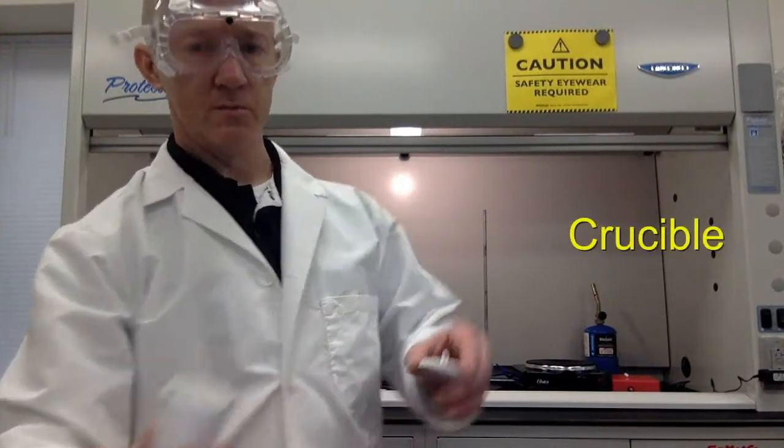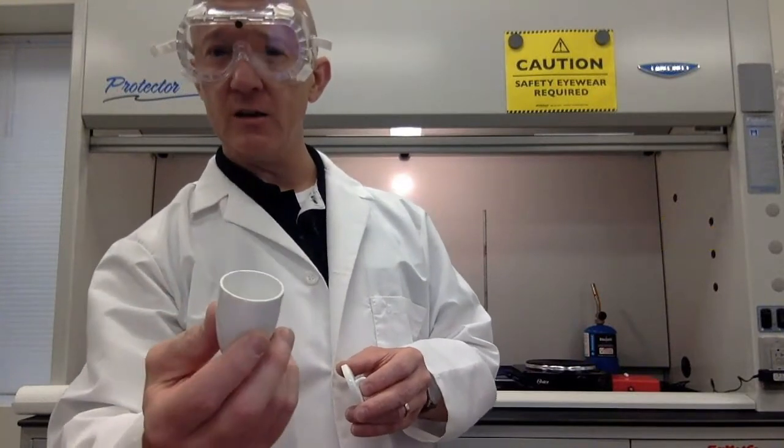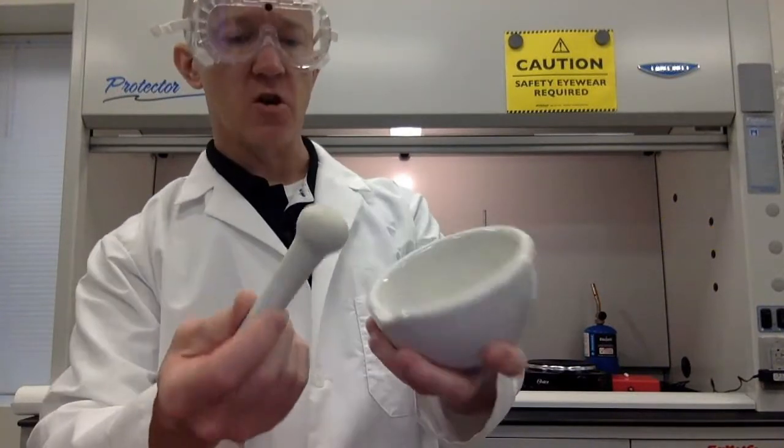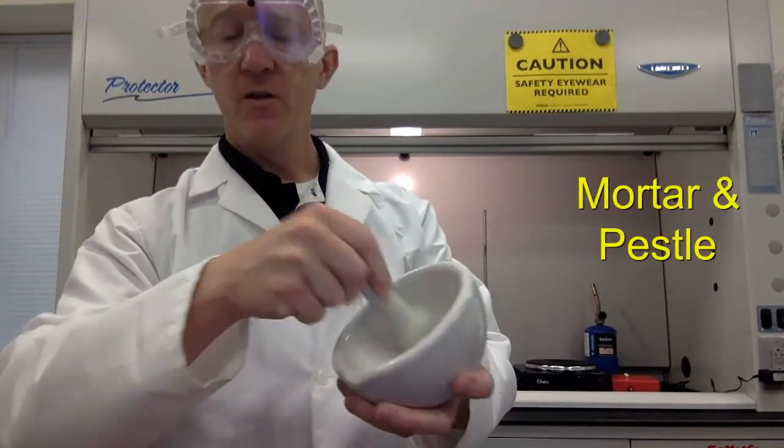This is called a crucible. Here's a lid for it. A crucible is used when you have something that needs to be more intensively heated. Say with a torch. This is called a mortar and pestle. This is used for taking solids that need to be crushed into powder.